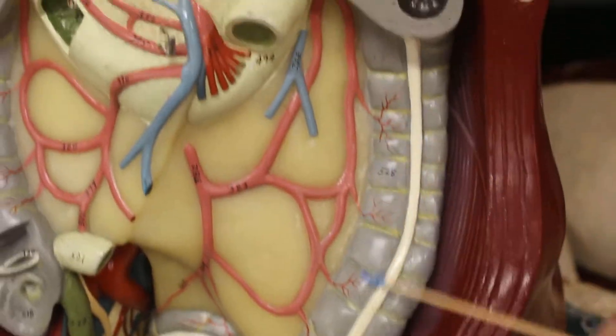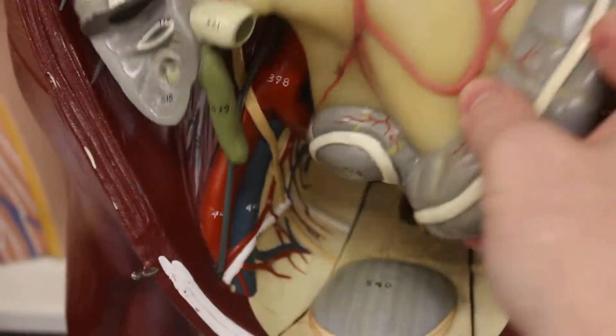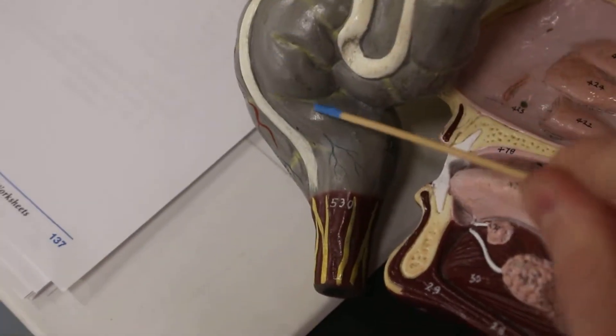So this is the descending colon which then leads to the sigmoid colon. Then you pull it up and you can see way down here the sigmoid colon is going to lead to